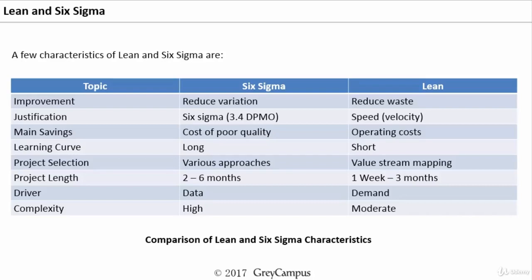The main savings through a Six Sigma project will come because of the reduction of cost of poor quality, whereas the savings from Lean projects will come because of reducing operating costs like reduction in inventory cost, improvement in productivity, and all those things.